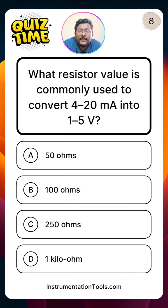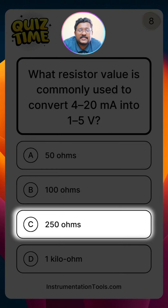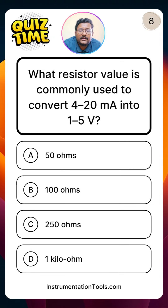What resistor value is commonly used to convert a 4 to 20 milliamp signal into 1 to 5 volts? The standard 250 ohm resistor is used — option C. As per Ohm's law, V = IR, so R = V / I. For example, 1 volt divided by 4 milliampere equals 250 ohms.